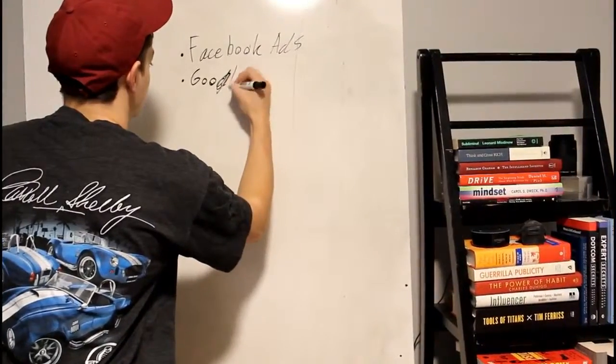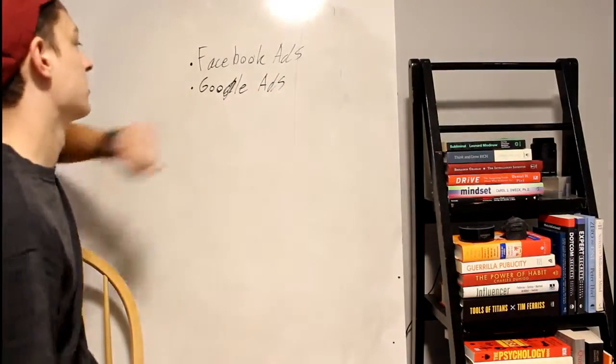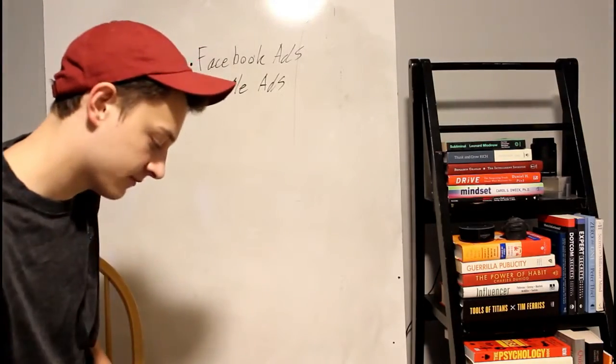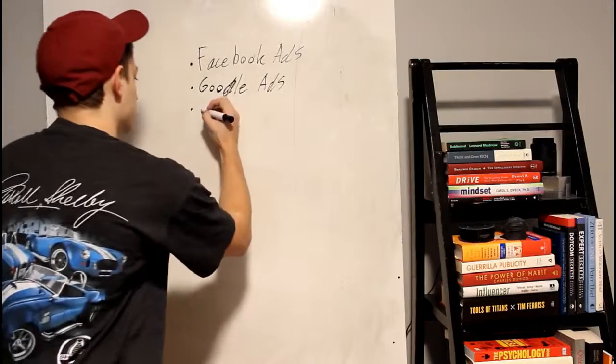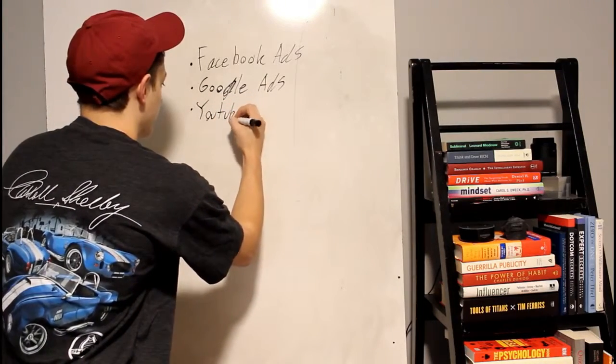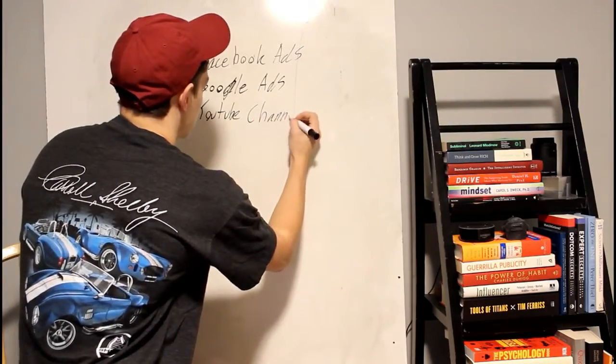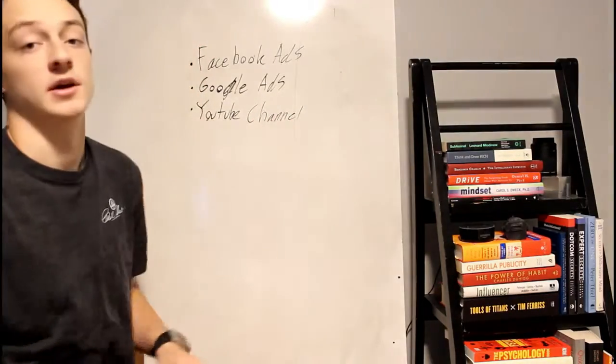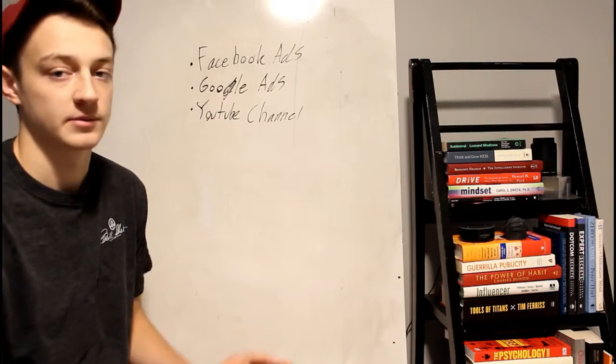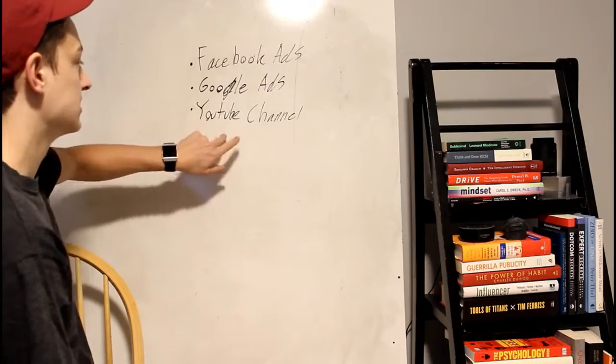Next one would be a YouTube channel. This is a free method unless you want to grow it with paid methods. But a YouTube channel is in my opinion the very best way to get traffic to anything in the world. Whatever it is, to any website, to whatever affiliate link you want to send it to, YouTube is the best way.